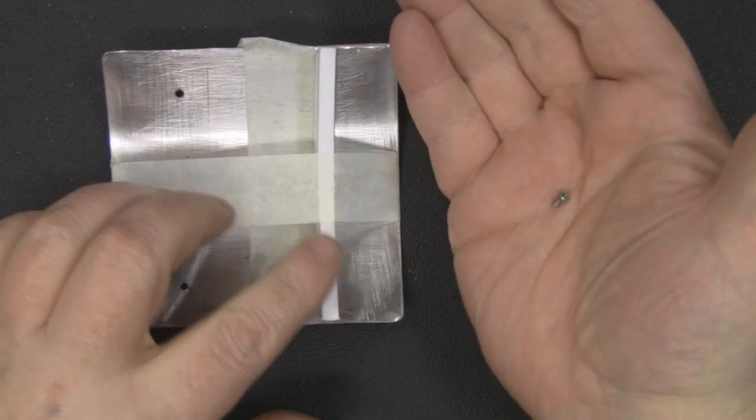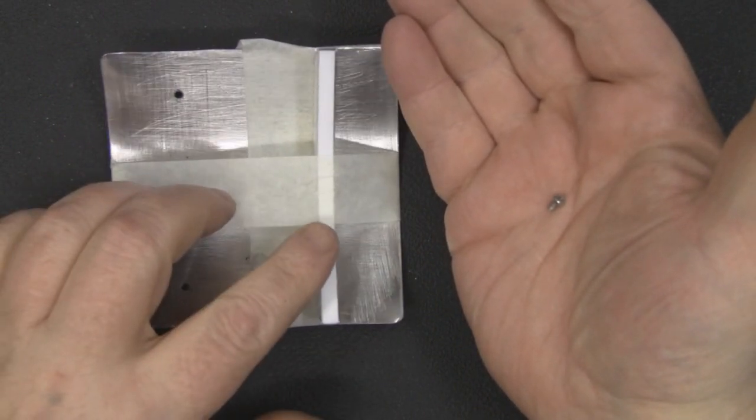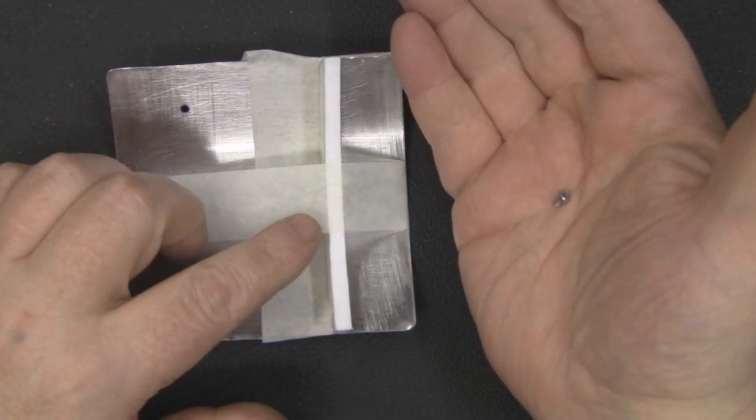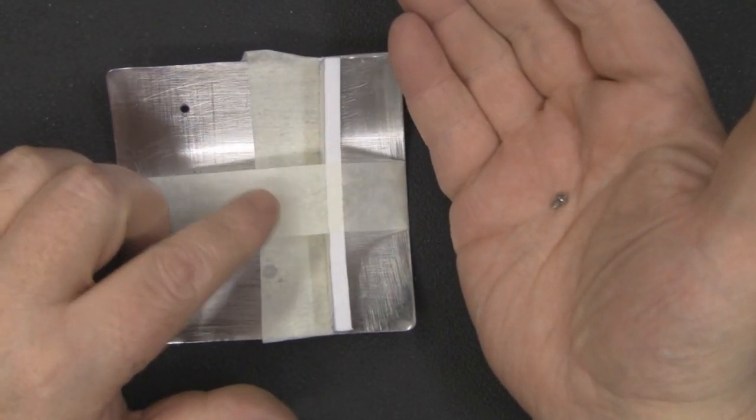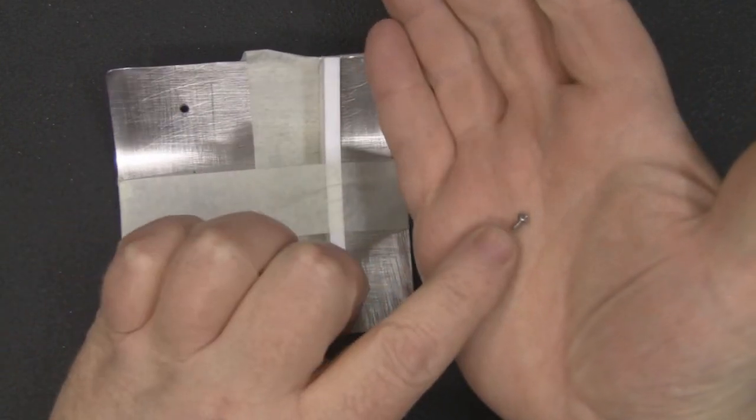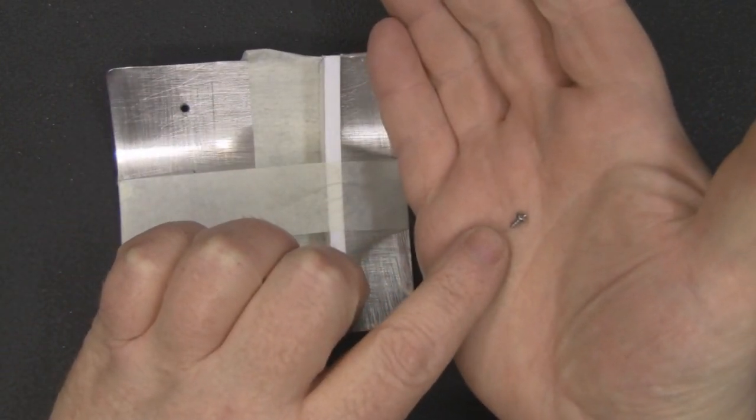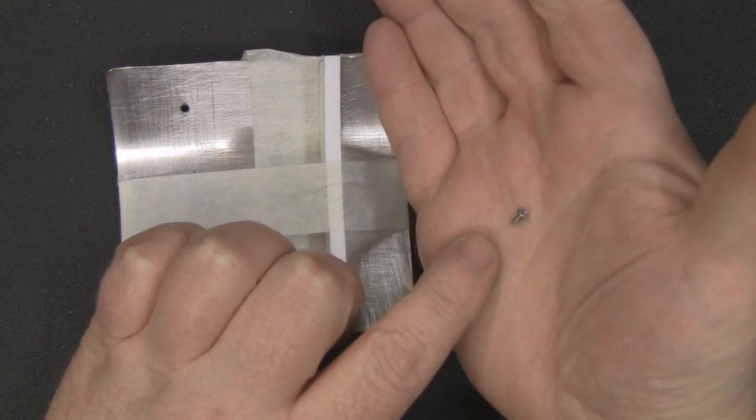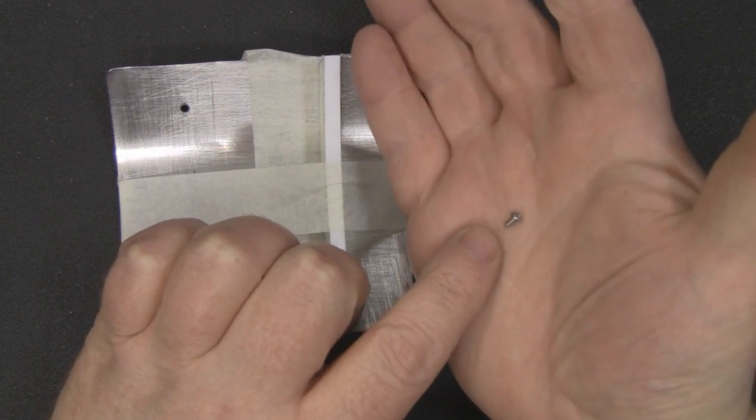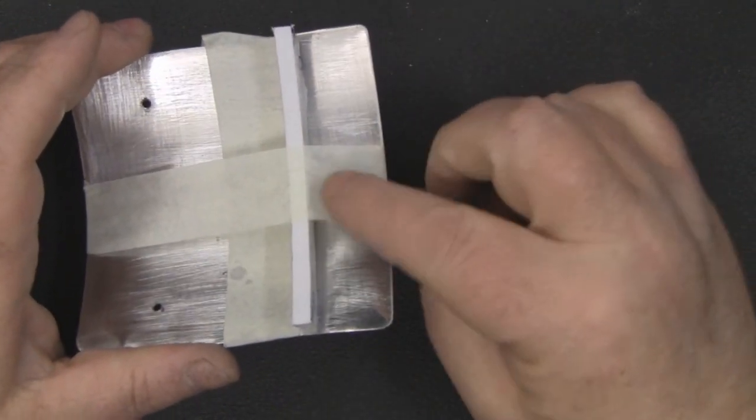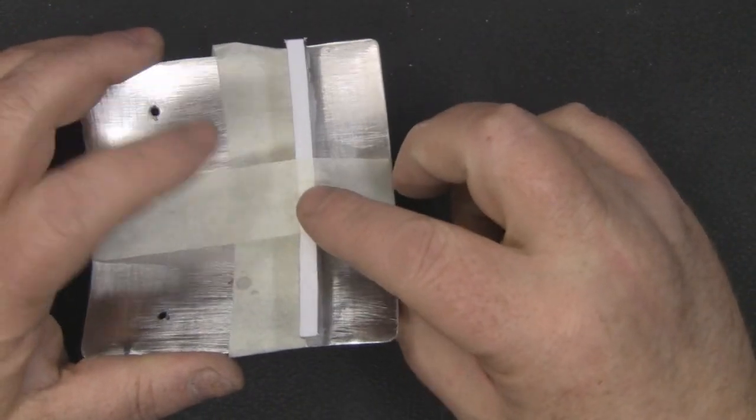To attach the spacers to the metal backplate, I've got here some small screws that I picked up off eBay. I picked 50 of these up for less than a pound, really cheap. These are actually 5 millimeters long.